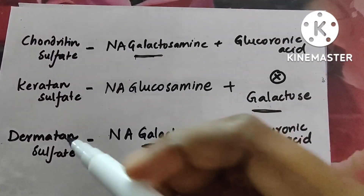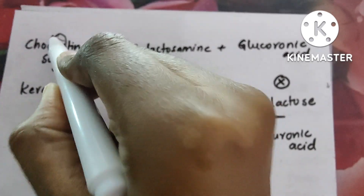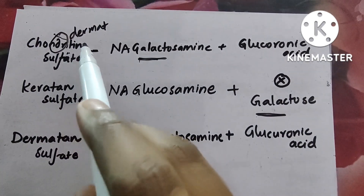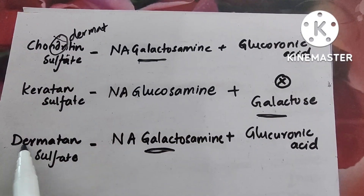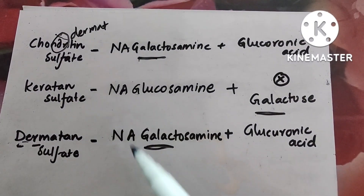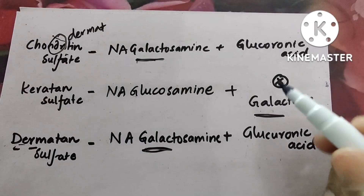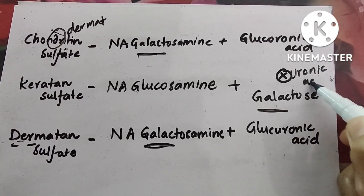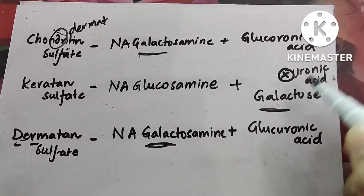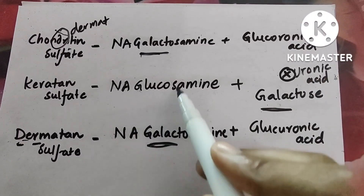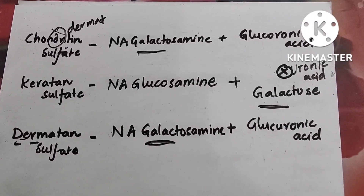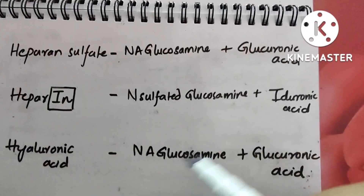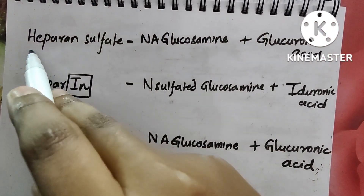Chondroitin and dermatan sulfate have almost the same composition: N-acetyl galactosamine plus glucuronic acid. In chondroitin's spelling you have 'DR', so remember it also has dermatan. Coming to keratan sulfate, there is no uronic acid — so instead of uronic acid you add galactose, and since galactose is already there, you change N-acetyl galactosamine to N-acetyl glucosamine.